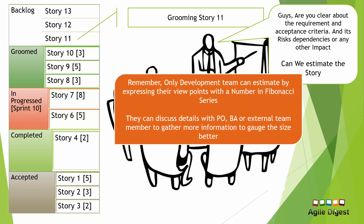Remember, only the development team can estimate — they express their viewpoints with a number in a Fibonacci series. They can discuss with the business owner, business analyst, UI team, UX team, or database team to gather more information. The Scrum Master will not estimate, nor will the product owner, but they can suggest based on similar previous stories. The final estimation always comes from the development team.